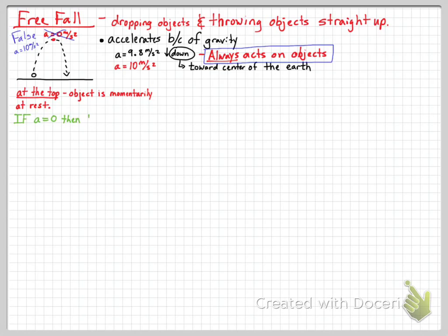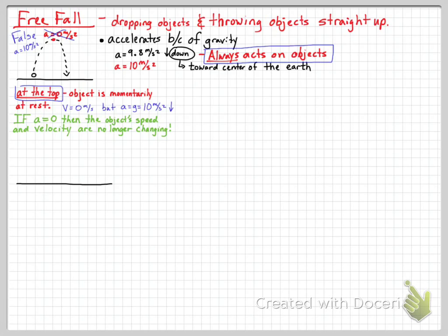Acceleration due to gravity is 10 meters per second squared. If acceleration were zero at the top, the object's speed and velocity would no longer change. Think of hitting a baseball — if gravity didn't act on it and acceleration was zero when it reached the top with zero velocity, the ball would just hang there in midair. Nobody could catch the fly ball; it would never clear the fence. So acceleration being zero would not work — gravity is still 10 meters per second squared downward.